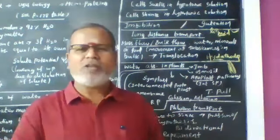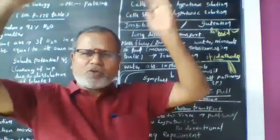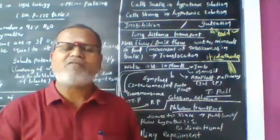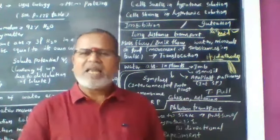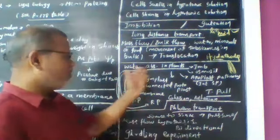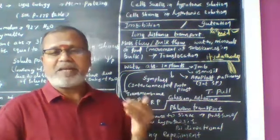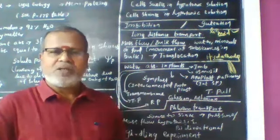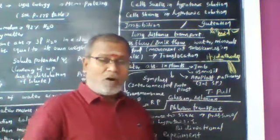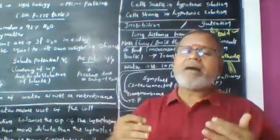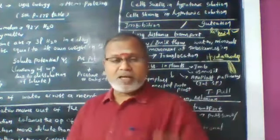Long-distance transport proceeds through mass flow or bulk flow. Water, minerals, and food are all transported over long distances through bulk transportation. How water is absorbed in plants involves several physical forces in absorption and conduction. The root structure from root hair to xylem includes: root hair, rhizodermis, cortex, endodermis, pericycle, and xylem.